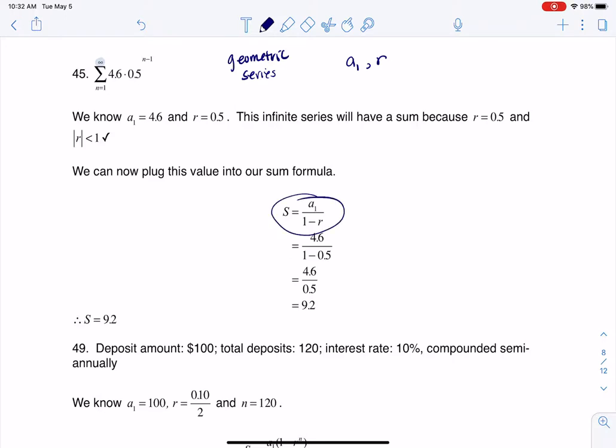And the geometric series formula, if it's infinite, is a sub 1 over 1 minus r, pending that your r is less than 1 in absolute value. So let's see if we can figure out our a1 value and our r value before we get going.